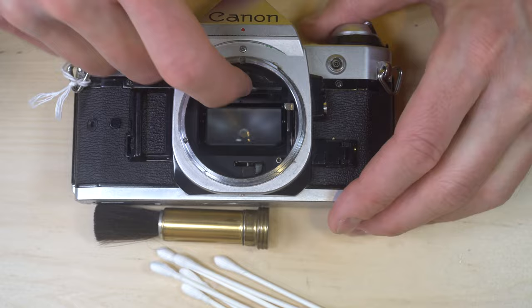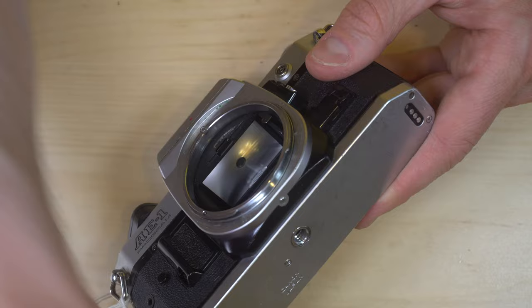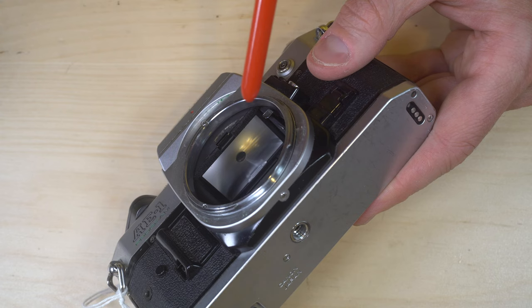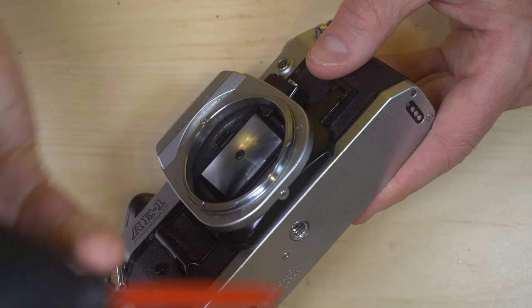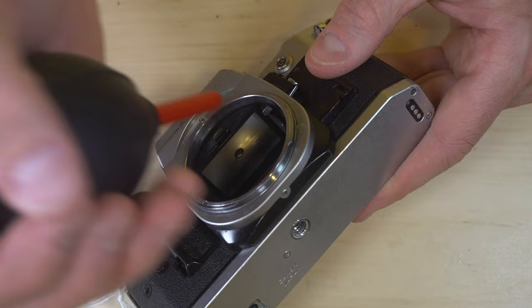So before I get to removing the focusing screen from this camera, the first thing we're going to do is look at how to handle dirt which is on the surface of the screen here. First step is always going to be your bulb blaster. Never, ever, ever use compressed air or canned air for this because it is too powerful. It could damage some of the sensitive bits in this mechanism. You might notice that my bulb blaster has some glue here. I used Gorilla Glue on both ends of this to help give it better air pressure by sealing up holes. And that is as much pressure as you really want to put onto your screen.